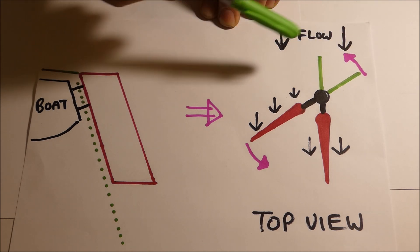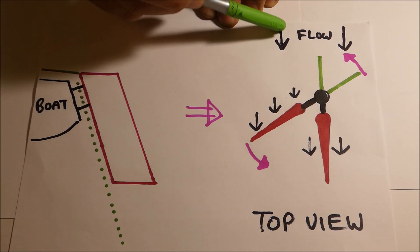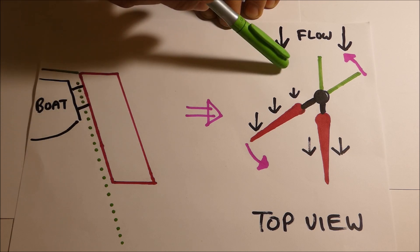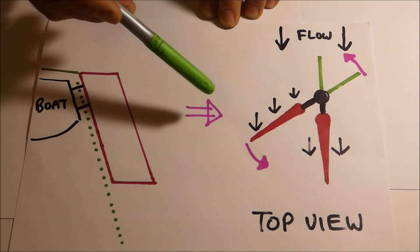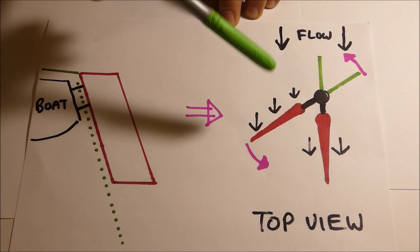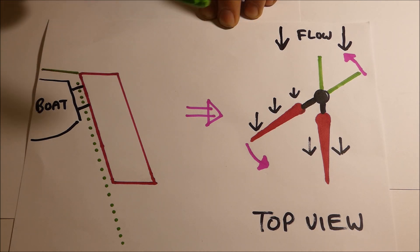If we turn the tiller to the side so the rudder blade deflects to the side, which is what turns the boat, the water will start hitting one side of the rudder and it does two things: one, it will deflect and cause the boat to start turning, and two, it creates a turning force on the rudder back towards the centre.